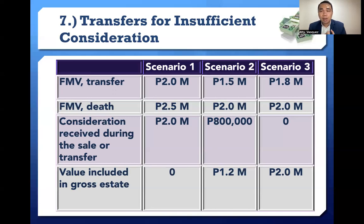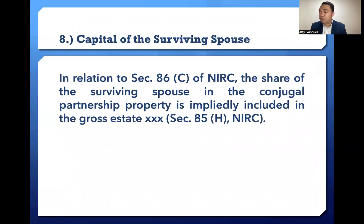Number eight is capital of the surviving spouse. In relation to Section 86C of the tax code, the share of the surviving spouse in the conjugal partnership properties is impliedly included in the gross estate.